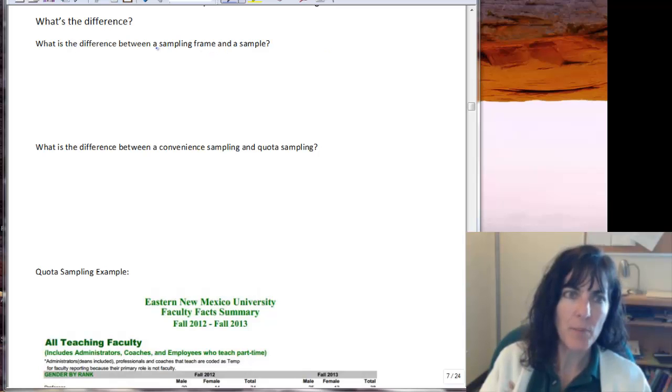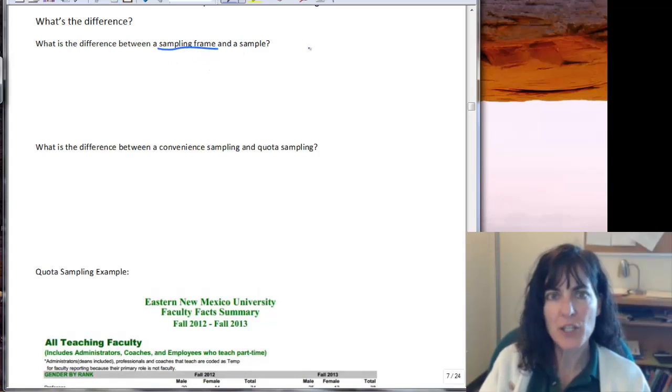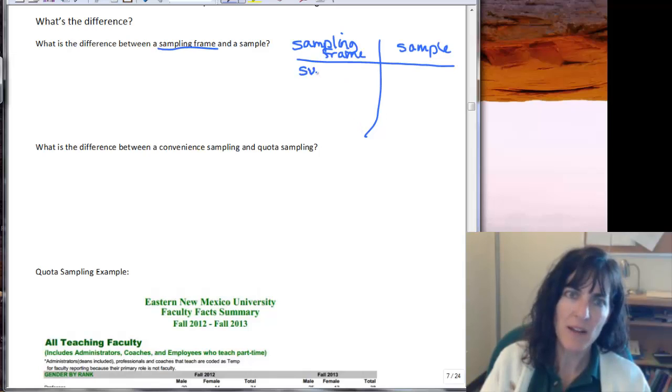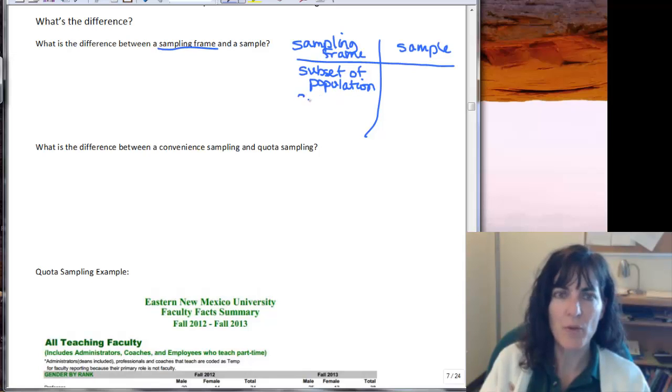A sampling frame is the part of the population. Let's write out what the difference is. So sampling frame and our sample. Our sampling frame is the subset of the population that we're choosing a sample from.